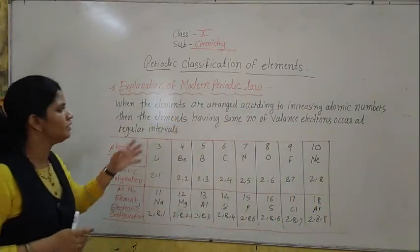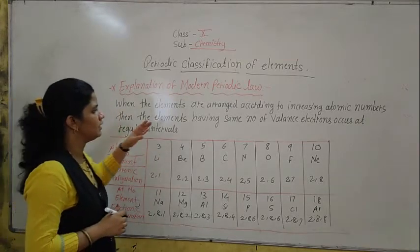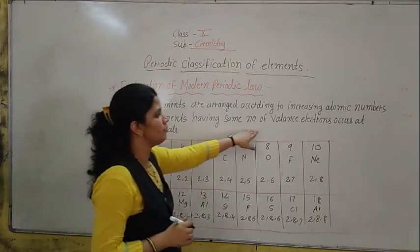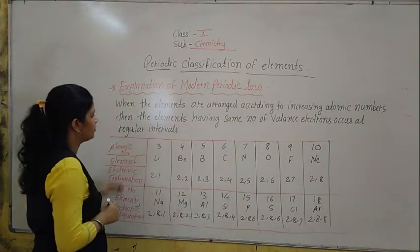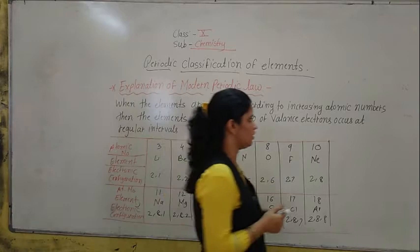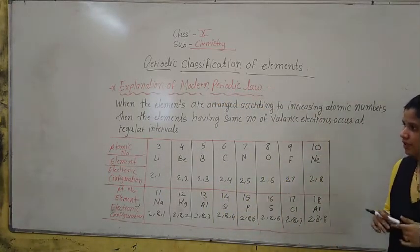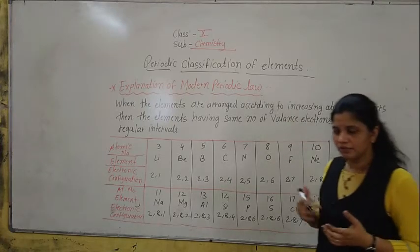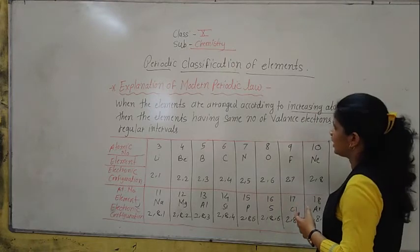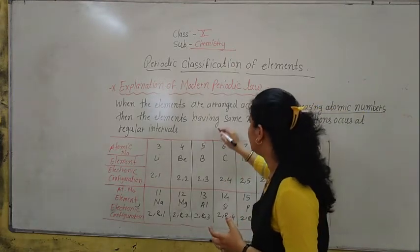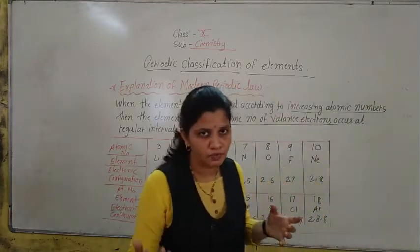When the elements are arranged according to the increasing atomic number, when the elements have the same number of valence electrons, they appear at a regular interval. So now we will take an example — see the increasing order of atomic number, which means we are having the same number of valence electrons. Now, what are valence electrons?